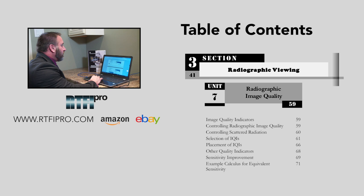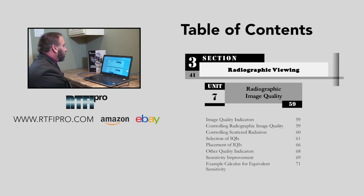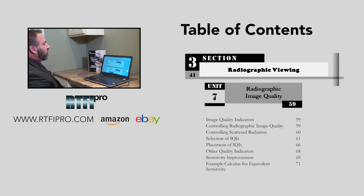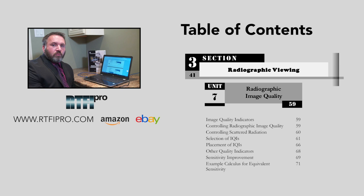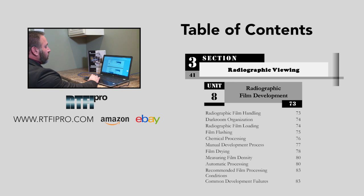Unit seven covers radiographic image quality — a very important topic on IQI. Topics include image quality indicators, controlling radiographic image quality, controlling scattered radiation, selection of IQIs, placement of IQIs, other quality indicators, sensitivity improvement, and example calculations for equivalent sensitivity. This is an international book, so we address all different forms of IQIs: ASME, ISO, DIN, and AFNOR IQIs.